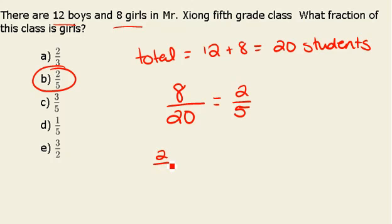We could check this by finding 2 fifths of our total of 20, and we will see that we indeed get back to 8 girls.